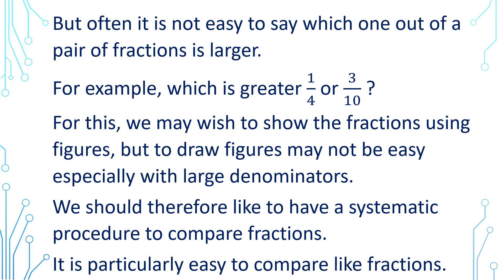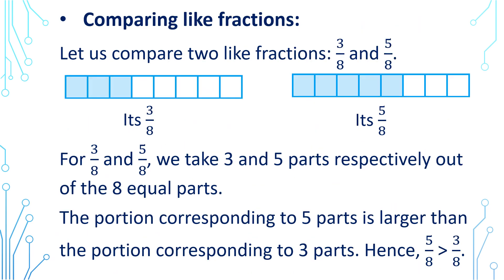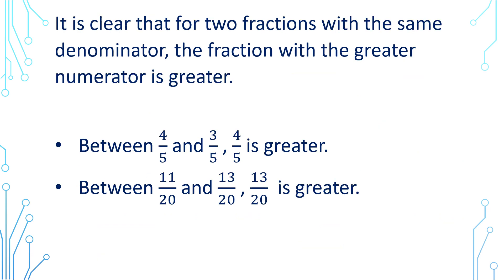It is particularly easy to compare like fractions. Let us compare 2 like fractions: 3 by 8 and 5 by 8. We take 3 and 5 parts respectively from 8 equal parts. The portion corresponding to 5 parts is larger than the portion corresponding to 3 parts. Hence 5 by 8 is greater than 3 by 8. For 2 fractions with the same denominator, the fraction with the greater numerator is greater. So between 4 by 5 and 3 by 5, 4 by 5 is greater; and between 11 by 20 and 13 by 20, 13 by 20 is greater.